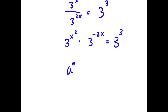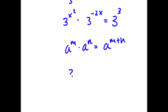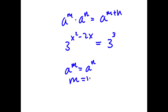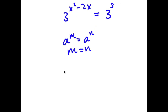And a to the power of m times a to the power of n equals a to the power of m plus n. So this is going to equal 3 to the power of x squared minus 2x is equal to 3 to the power of 3. Now, if I have something in the form a to the power of m equals a to the power of n, this means that m is equal to n. So in this case, x squared minus 2x is equal to 3.